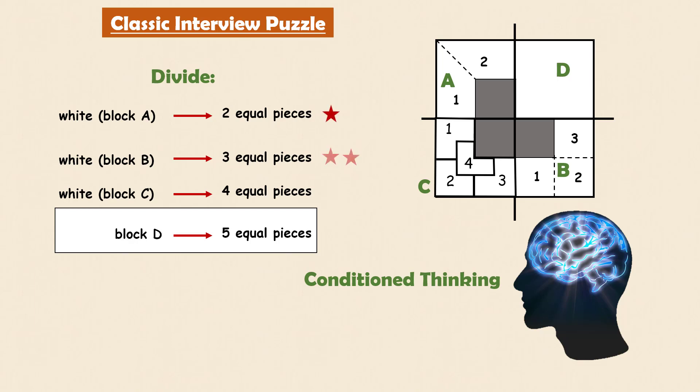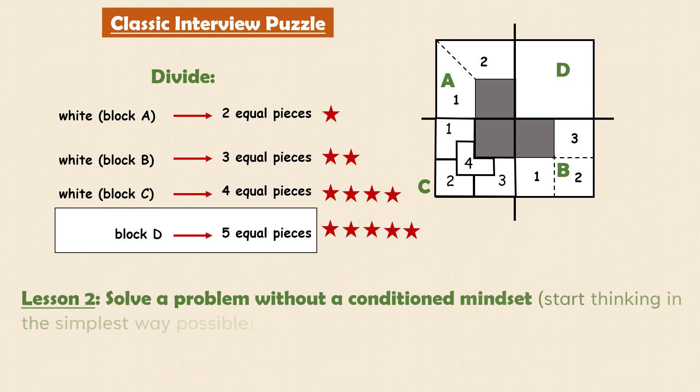As the level of complexity was increasing in the first three tasks, our subconscious mind thinks that the next task would be even more challenging. So the second lesson is solve a problem without having a conditioned mindset and start thinking in the simplest way possible.